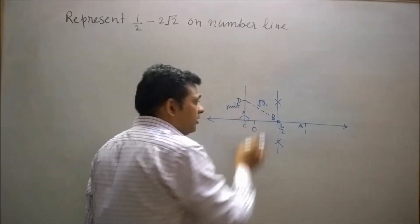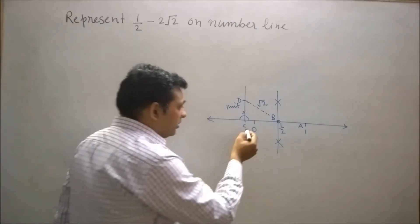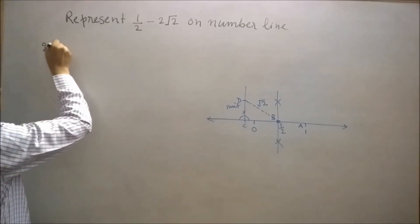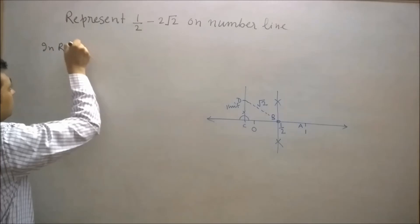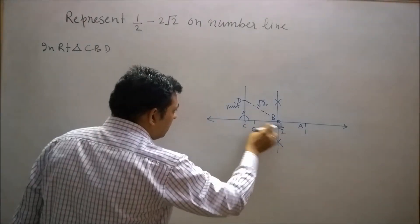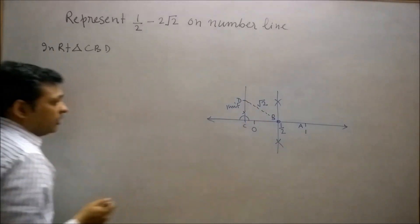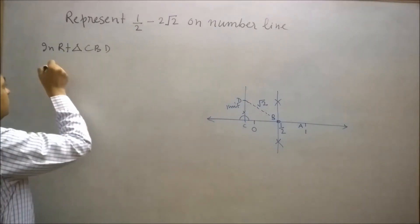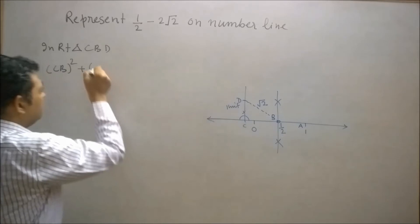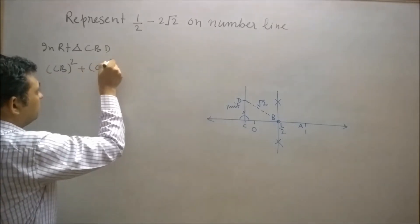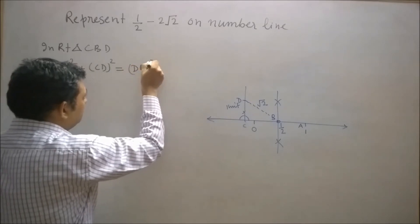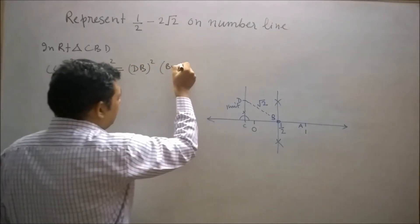Let's try to understand why DB represents root 2. In right angle triangle CBD, square of CB plus square of CD is equal to square of DB by Pythagoras theorem.